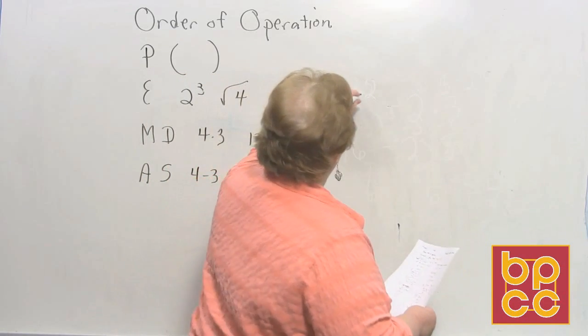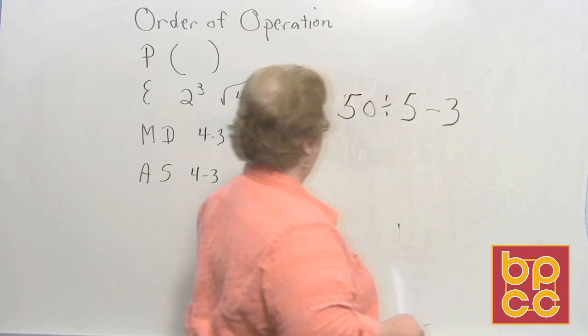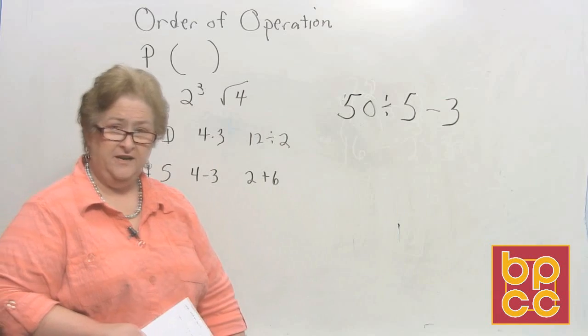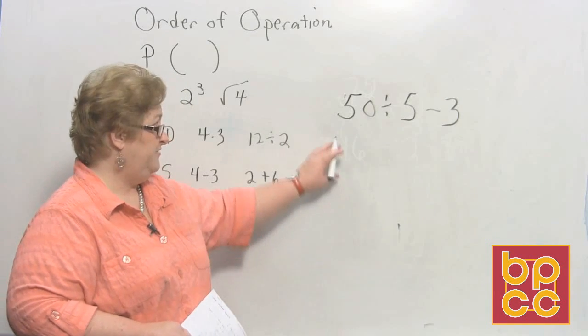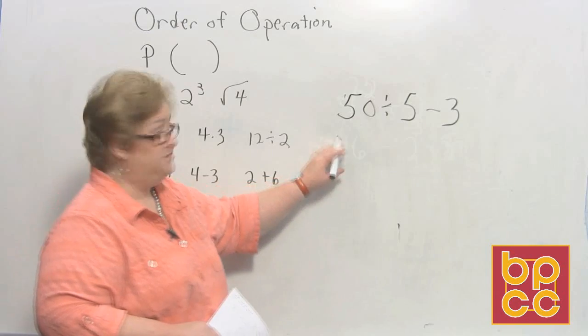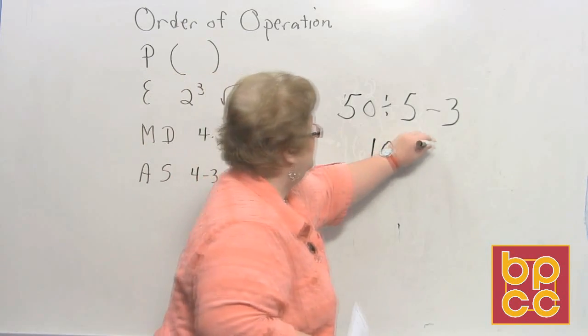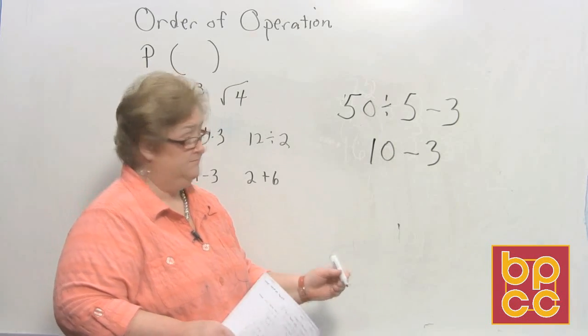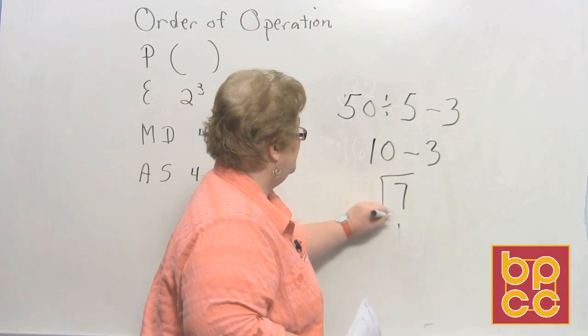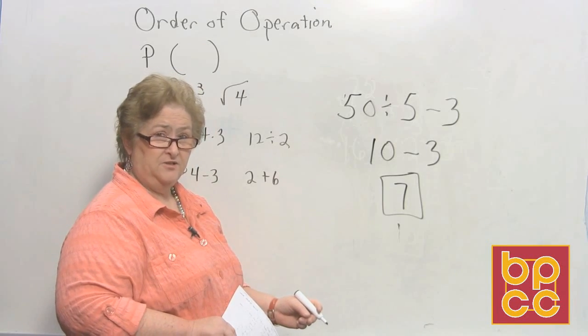Let's try 50 divided by 5 minus 3. Well, we have a division and a subtraction. So let's divide first. 50 divided by 5 is 10. I'll write 10 minus 3. And 10 minus 3 is 7. So our answer on this one is 7. Division first followed by subtraction.